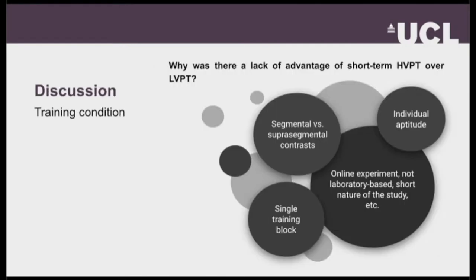What could explain these results? The lack of high variability phonetic training benefit could be due to many factors. One may be individual aptitude differences, where individual aptitude determines the extent to which a listener benefits from input variability. It may also be the case that low variability training is sufficient for learning to discriminate non-native contrasts. Additionally, my phonetic contrasts were suprasegmental ones — tones — whereas previous studies using the high variability paradigm were based on segmental contrasts, so high variability training may not be as effective for suprasegmental contrasts. It could also be due to using a single training session — this is why my project was titled short-term phonetic training.